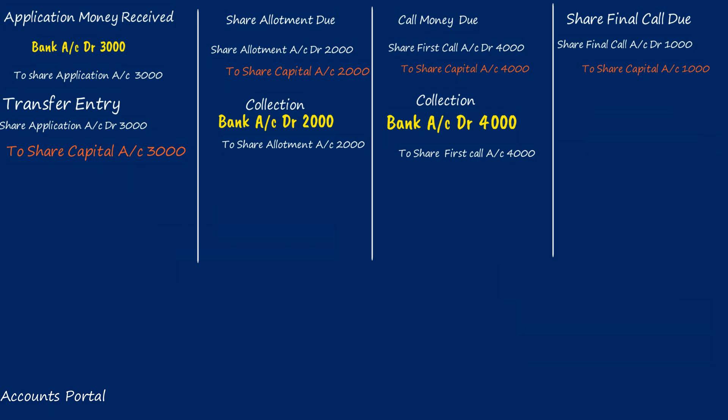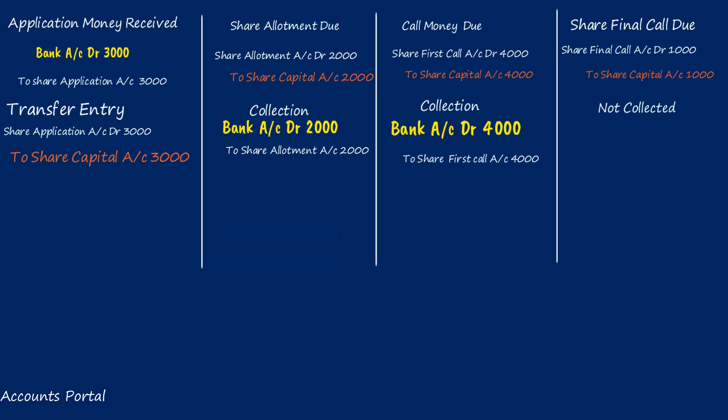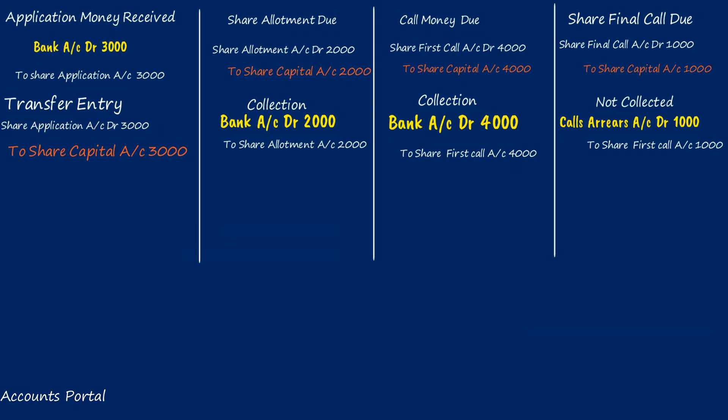If Brahmi had paid, the entry would be: Bank account Dr. to Share Final Call account. But since he did not pay the money on the due date, the journal entry is: Calls in Arrears account Dr. to Share Final Call account — because the amount is receivable. Till now, the directors have not forfeited the shares.